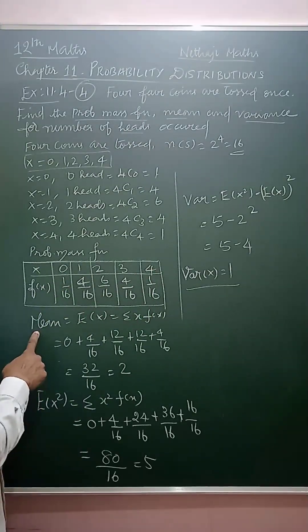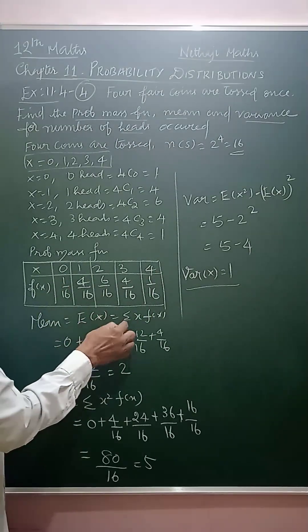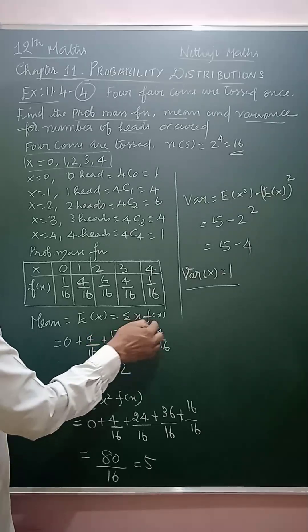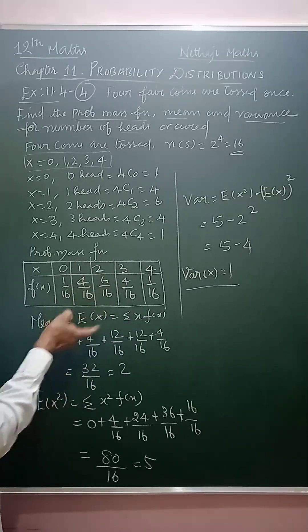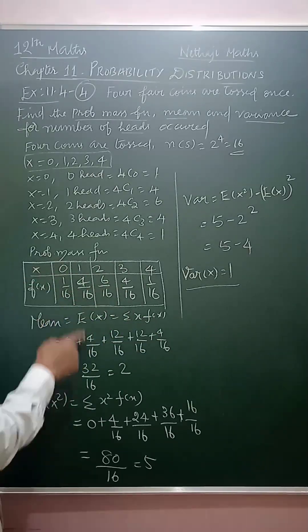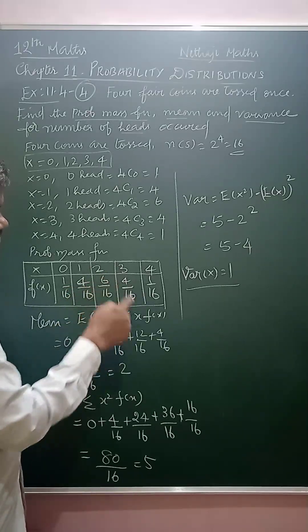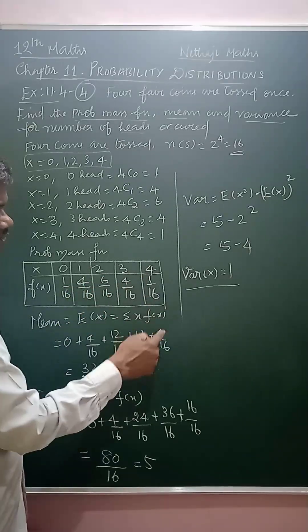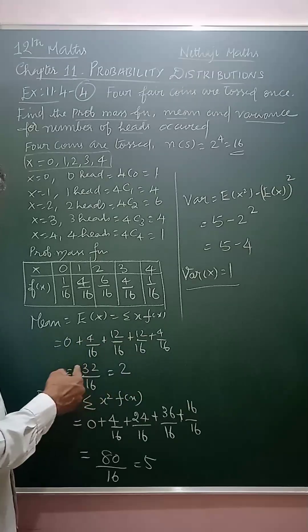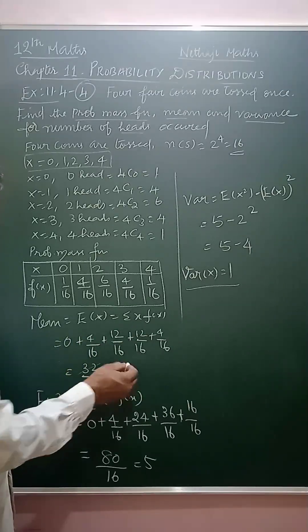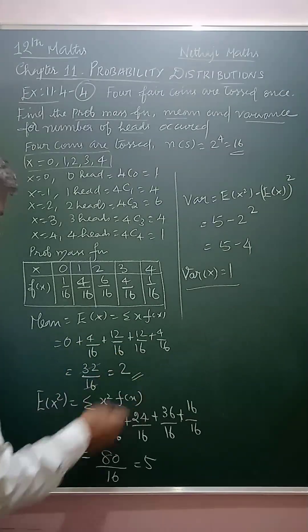So, now we have to find the mean. Mean equal to E of x. The formula for that is summation of x into f of x. 0 into 1 by 16, 1 into 4 by 16, 2 into 6 are 12, 12 by 16, 3 into 4 are 12, 12 by 16, 4 into 1, 4 by 16. If you cancel this, you will get 2. So, this is the value of mean.